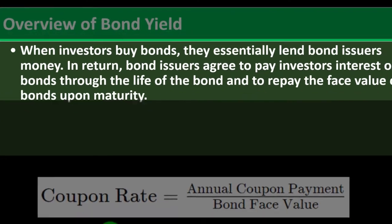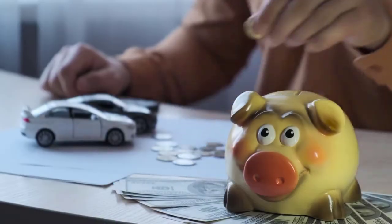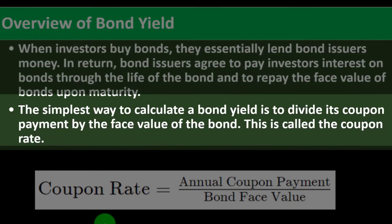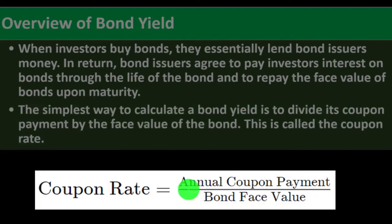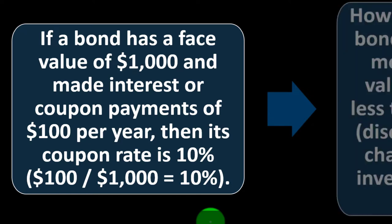Overview of bond yield: when investors buy bonds, they essentially lend money to the issuer — a corporation or government. In return, bond issuers agree to pay investors interest through the life of the bond and repay the face value at maturity. The simplest way to calculate bond yield is to divide its coupon payment by the face value — called the coupon rate. For example, if a bond has a face value of $1,000 and makes coupon payments of $100 per year, its coupon rate is 10%.